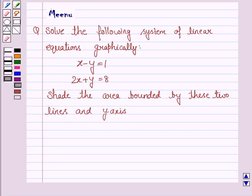Hello and welcome to the session. Let's discuss the following question: solve the following system of linear equations graphically. The given equations are x minus y is equal to 1 and 2x plus y is equal to 8. Shade the area bounded by these two lines and the y-axis.